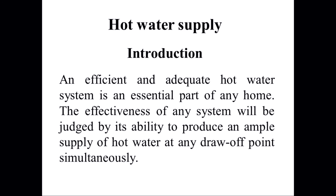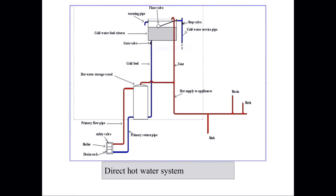Hot water supply introduction: an efficient and adequate hot water system is essential for any home. The effectiveness of any system will be judged by its ability to produce an ample supply of hot water at any draw point simultaneously. The diagram for the direct hot water system shows a boiler, a cylinder, a feed system, and supply going to the hot water outlets, with a feed pipe feeding the cylinder and boiler.